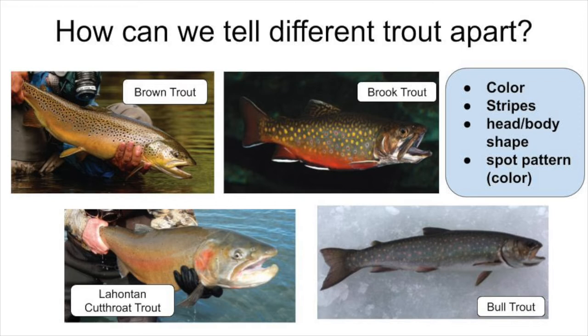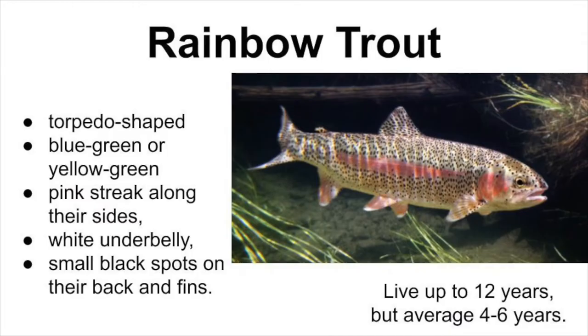We can distinguish the different species of trout by looking at the colors, stripes, head and body shape, and their spot pattern and color. Rainbow trout specifically are torpedo shaped and tend to be blue-green or yellow-green in color. They also have a pink stripe along their sides, a white underbelly, and small black dots on their back and fins.